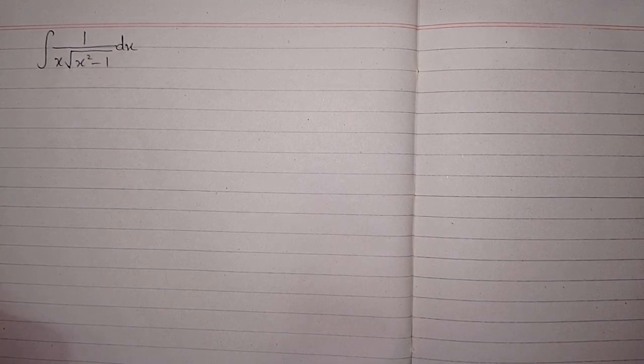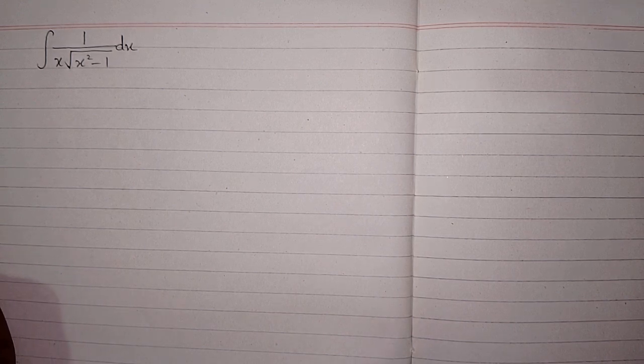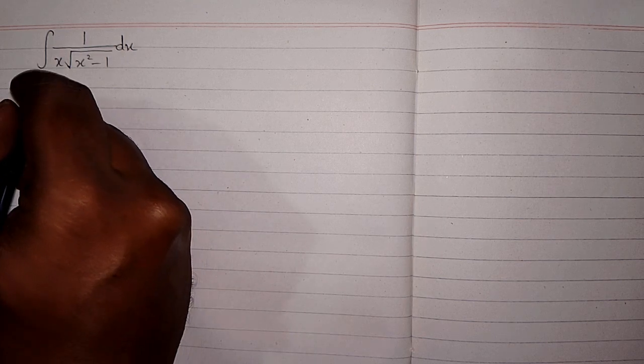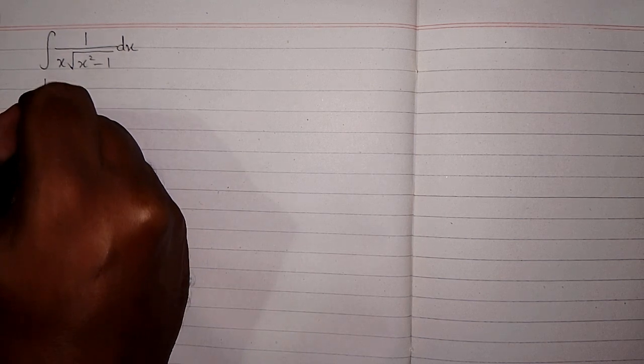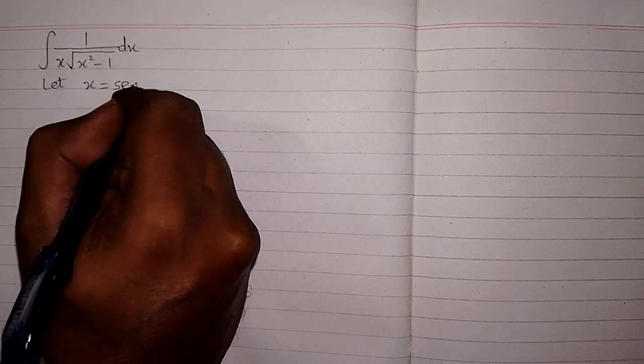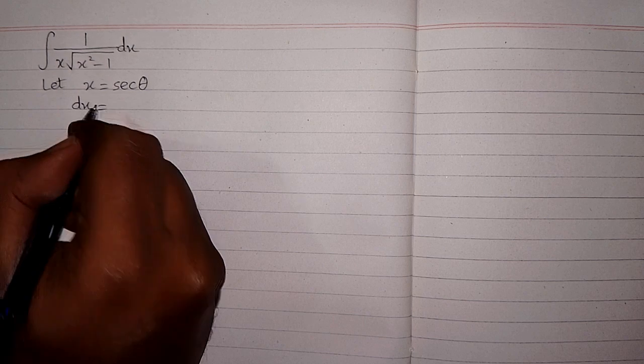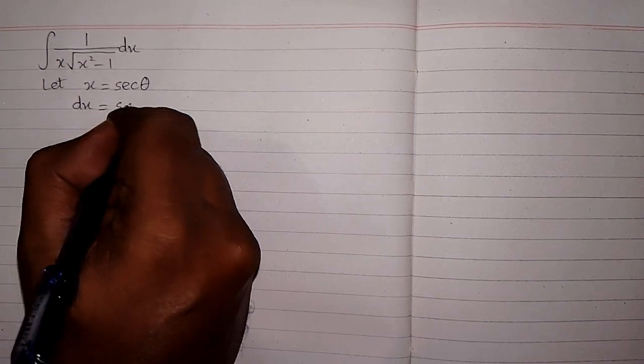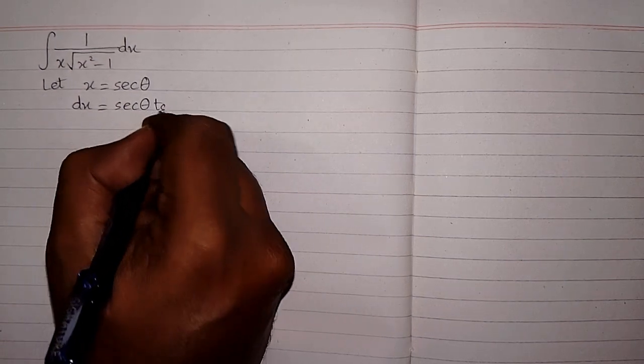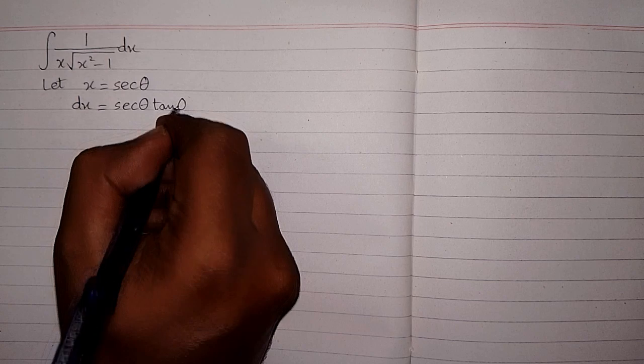In this video we will find the integral of 1 upon x times the square root of x squared minus 1. In order to integrate this function we will use trigonometric substitution. So let x equal sec θ, so the differential dx is equal to the derivative of sec θ, which is sec θ tan θ, multiplied by dθ.